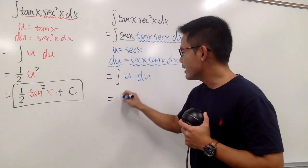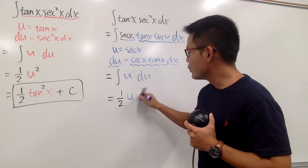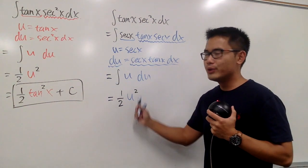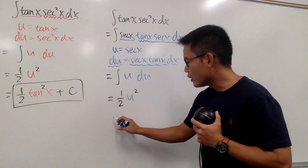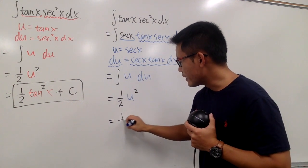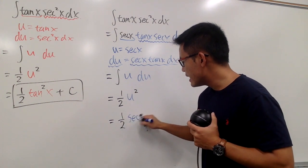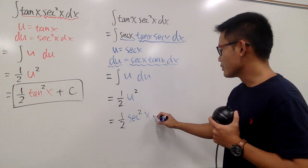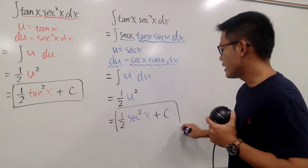Do this right here. We get 1 half u squared. In this case, u is secant x. So our result here is 1 half secant squared x. We are done. We can also put down a plus c, like this.